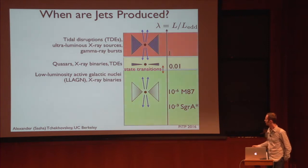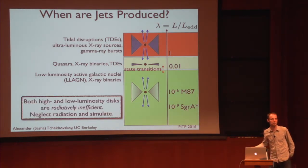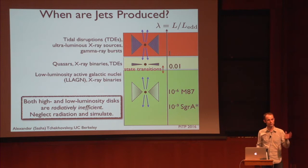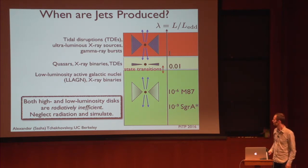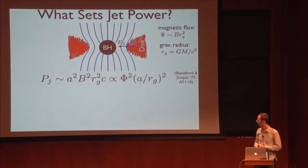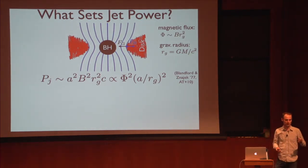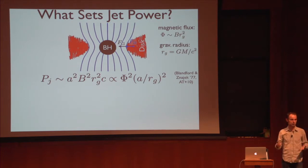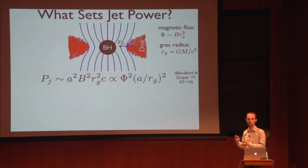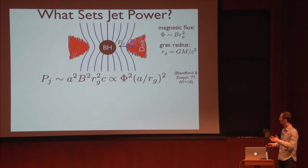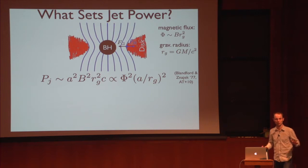Because the high and low accretion states are both radiatively inefficient, I will neglect radiation altogether to make the simulation as simple as possible. Before doing so, let's ask: what do we expect for the connection between jet power and accretion rate? We measure jet power by the effects jets have on the ambient medium or the radiation they produce, and we measure accretion rate from the accretion disk luminosity. What is the possible maximum power you would expect out of a black hole?